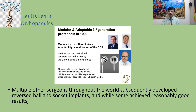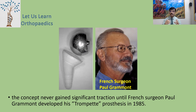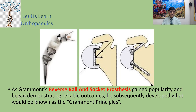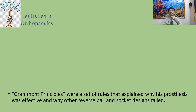Multiple other surgeons subsequently developed reversed ball and socket implants, but the concept never gained significant traction until French surgeon Paul Grammont developed his Trompette prosthesis in 1985, further modified into the Delta 3 prosthesis in 1991. As Grammont's reverse ball and socket prosthesis gained popularity and demonstrated reliable outcomes, he developed what became known as the Grammont principles — a set of rules explaining why his prosthesis was effective and why other reverse designs failed.